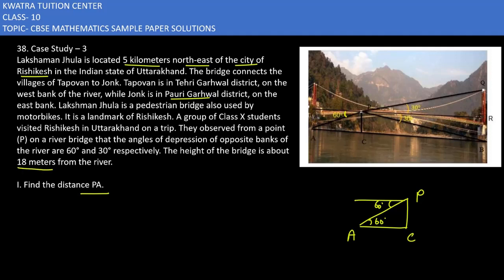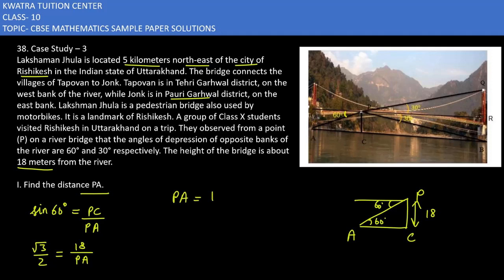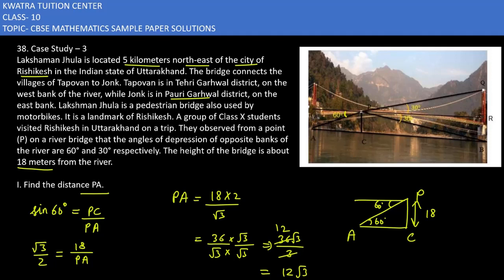PC distance is 18 meters. Now we have to find PA. PA is equal to 18 divided by... working through the calculation, we get 36√3 divided by 3, which gives us 12√3. So the answer for the first part is PA = 12√3 meters.